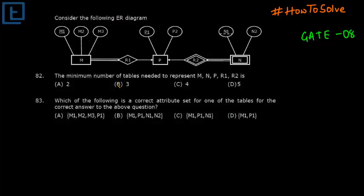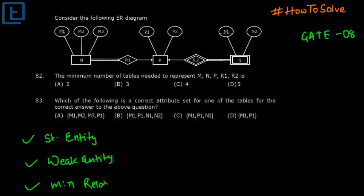The first rule is the following are the cases where we take separate tables. First one is strong entity. The next case is weak entity. Now for relations, if we have 1 is to 1 or 1 is to n, we won't take any separate table. But if we have m is to n relation, that is many to many relationship, then we will take a separate table. For attributes, if we have multivalued attribute or composite attribute, then we will take a separate table.